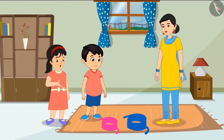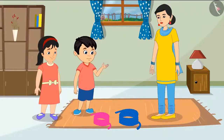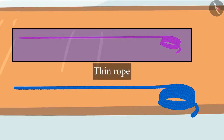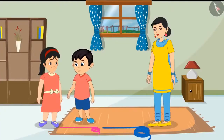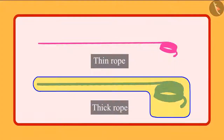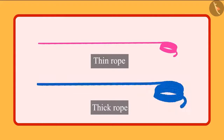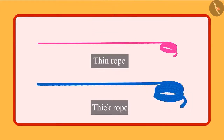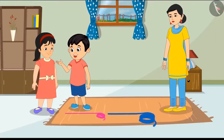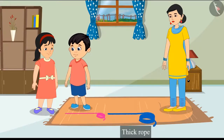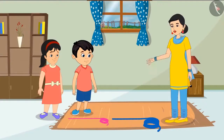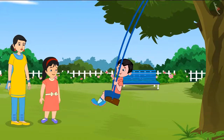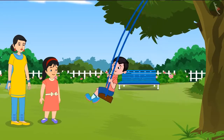Chotu and Pinky look at the ropes. One rope is thin — mummy warns, 'This rope is thin. If you make a swing with it, the swing will break as soon as you sit on it.' Pinky asks, 'Really mummy, what should we do?' Mummy says, 'You should make a swing with this thick rope — it won't break when you sit.' Pinky confirms, 'We will make the swing with the rope because this rope is thicker.' Mummy helps hang the swing, and Chotu and Pinky swung a lot and had fun.